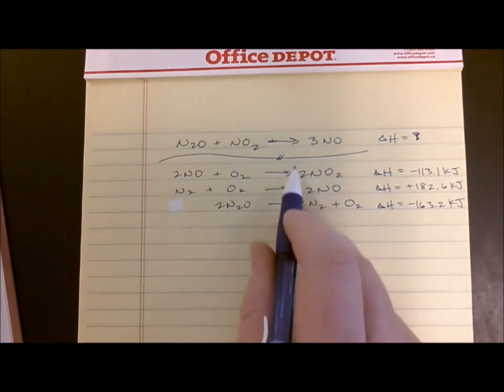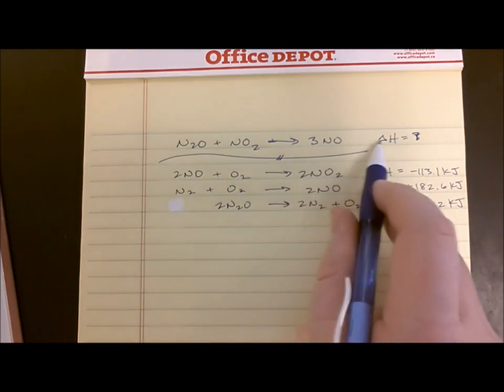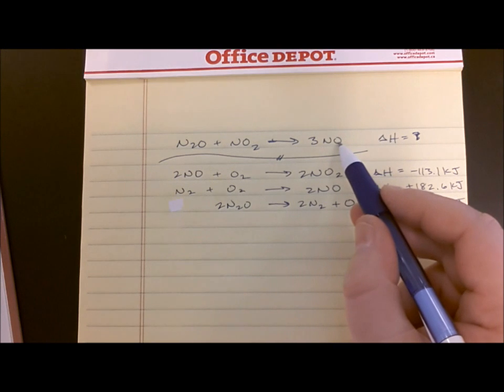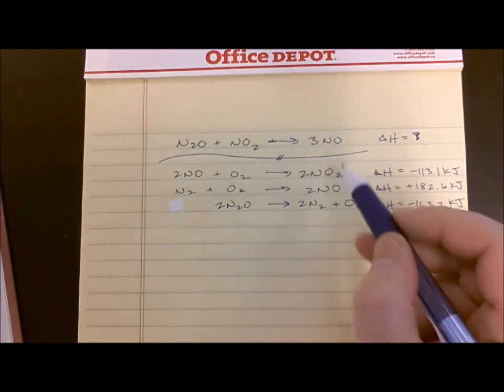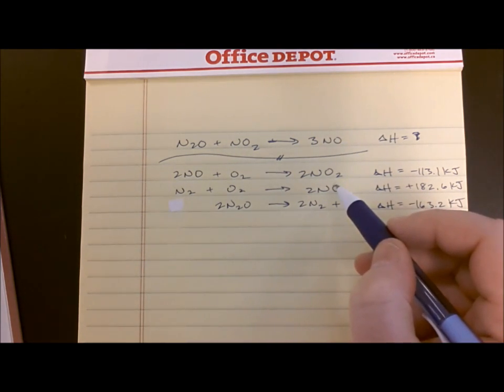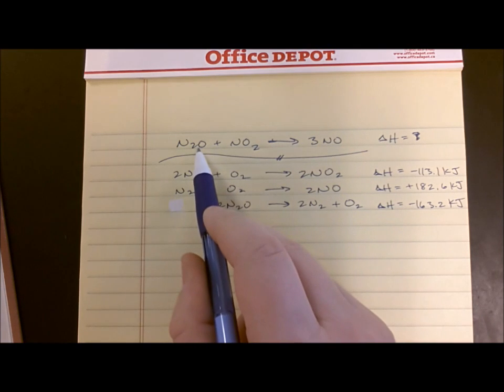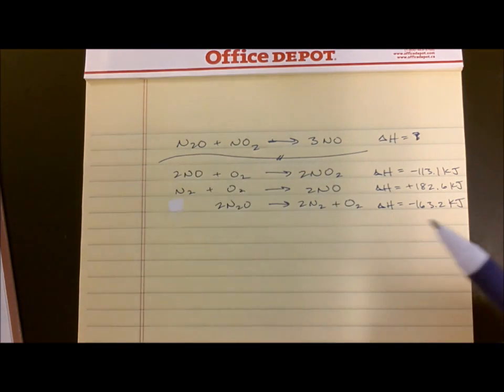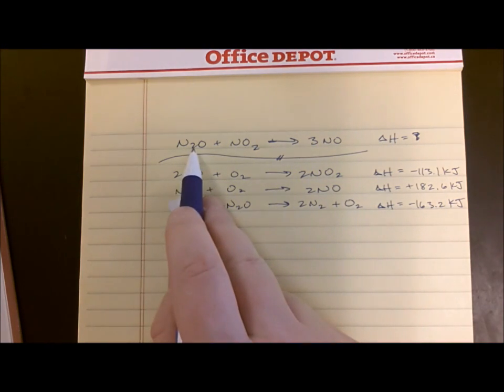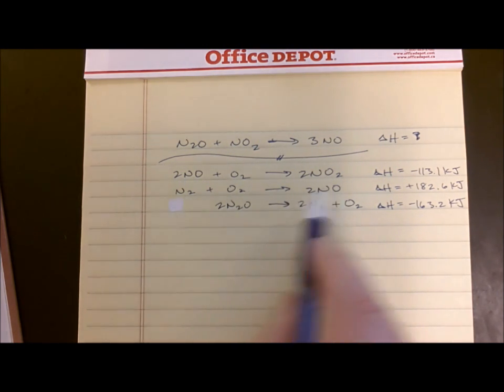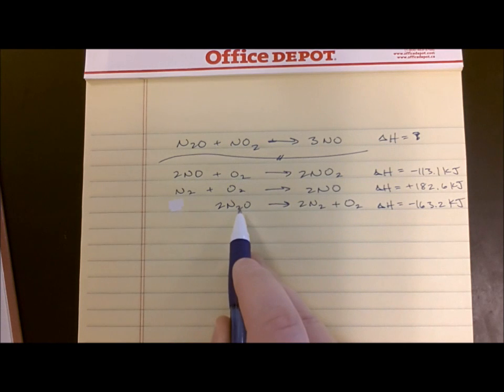I want this equation. I'm going to piece this together from this information down here. For example, I need N2O. I need three nitrogen monoxides on the right side, one nitrogen dioxide on the left side, and one dinitrogen monoxide on the left side. Where am I going to get that from? The only place to find a dinitrogen monoxide is right here. Nowhere else in these equations do you find N2O, just right here. So I know this is going to be my source of N2O.